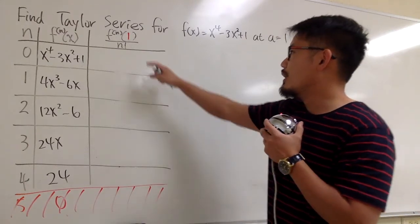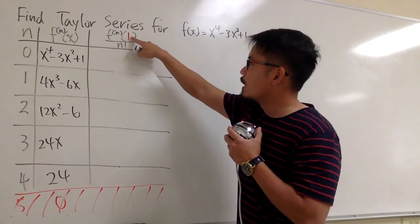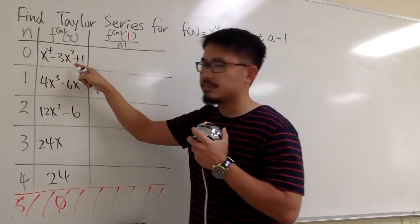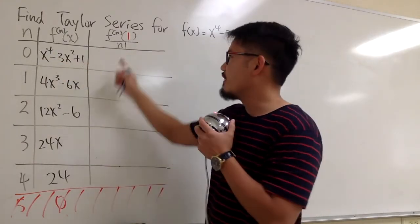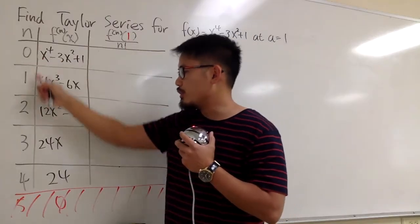And now we have to work out the Taylor formula. What it says is that we are going to plug in 1 into these x values, and then divide by n factorial according to the n values.